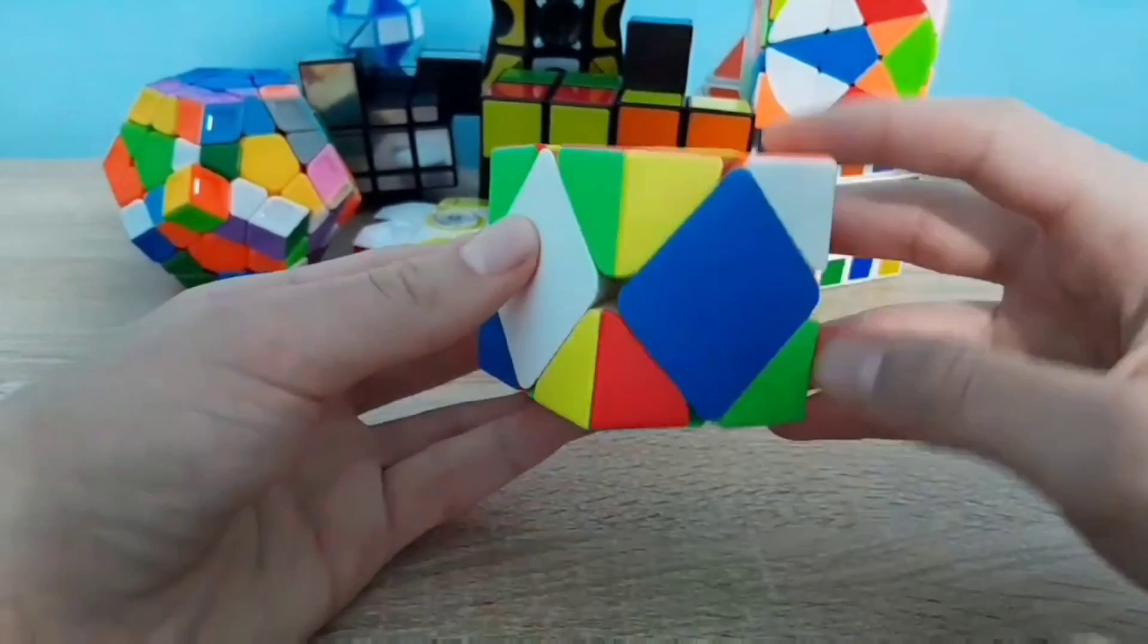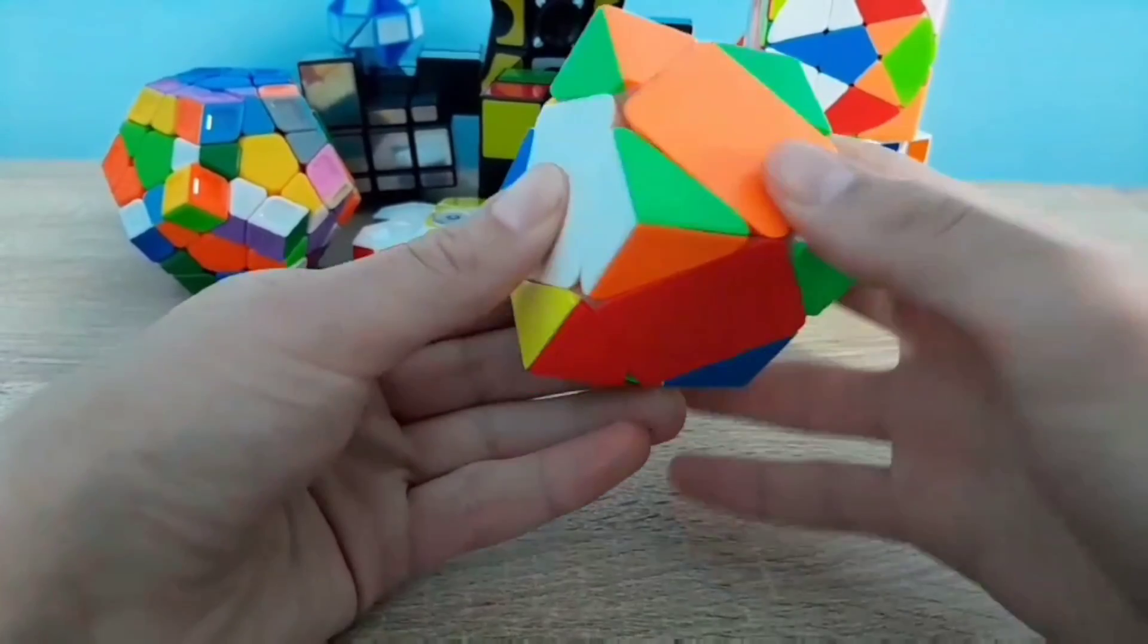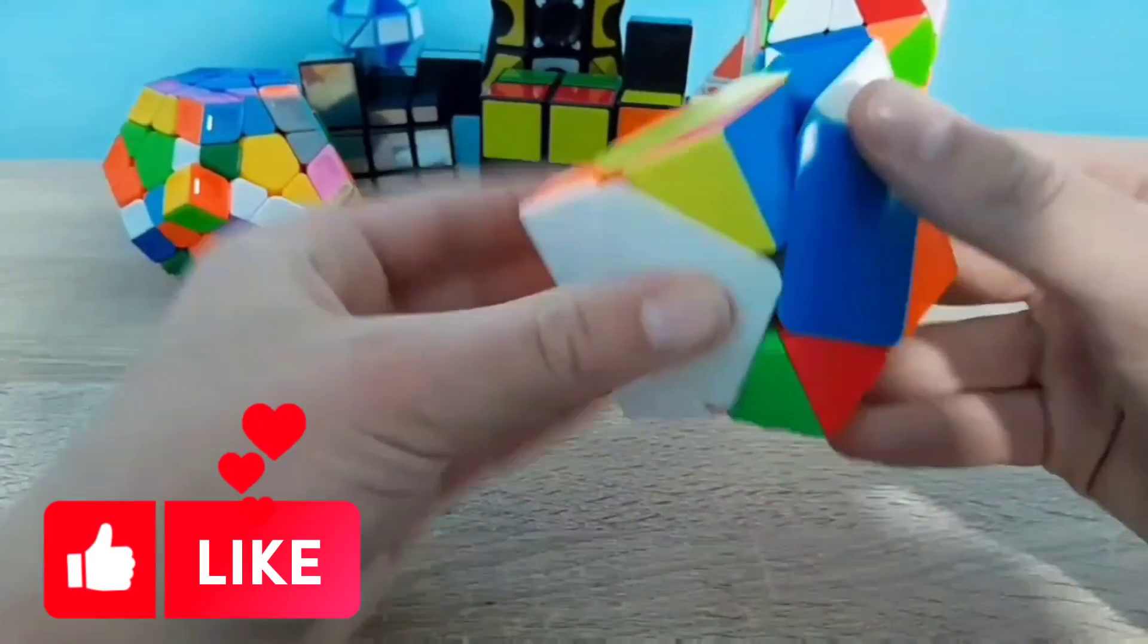The next cube is called S-cube. The first step is to solve one color and the first row.